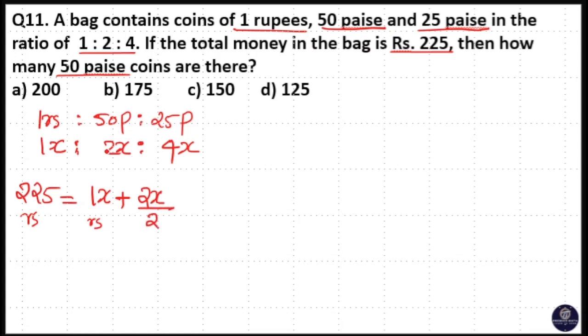So I will divide it by 2 because 1 rupee divided by 2 is equal to 50 paise. The same way, this is 25 paise: 1 rupee divided by 4 is equal to 25 paise.